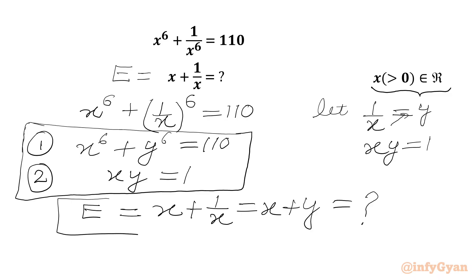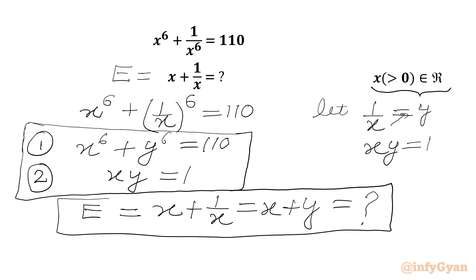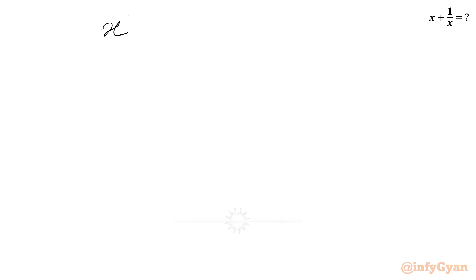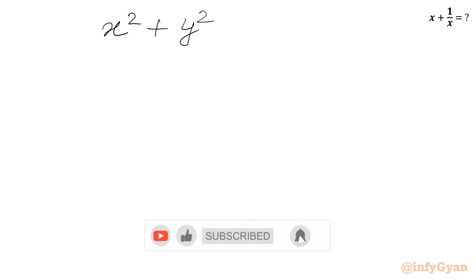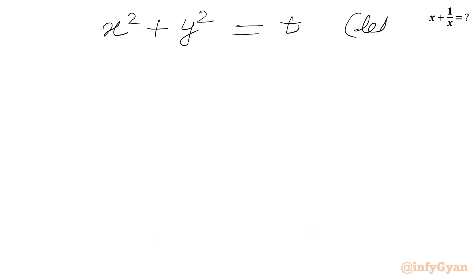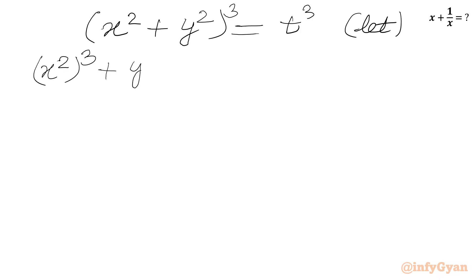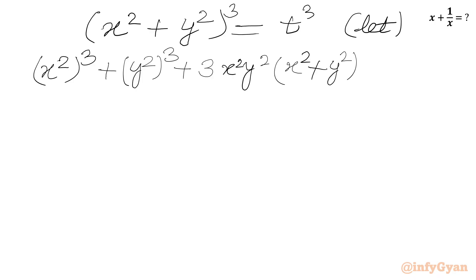Now this is our required expression — let's call it E. Since 1/x = y, we write E = x + 1/x = x + y. We have a nonlinear system: x⁶ + y⁶ = 110 and xy = 1, and we need to evaluate x + y. I will consider x² + y², and suppose this equals t. Now we will cube both sides: t³ = (x² + y²)³.